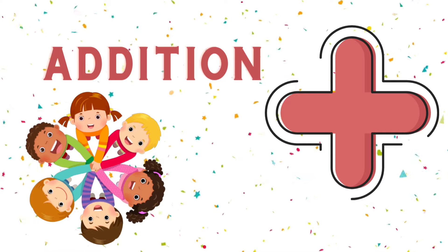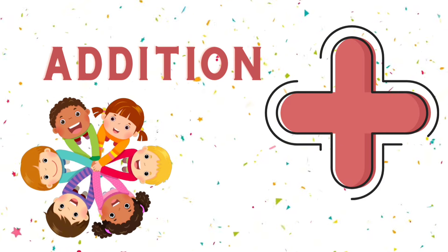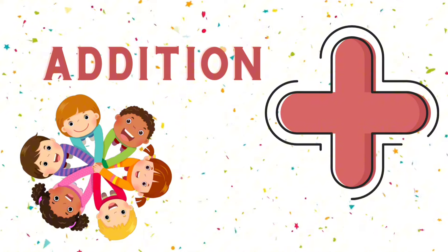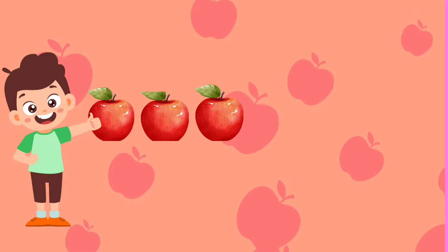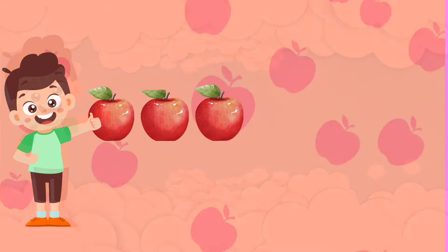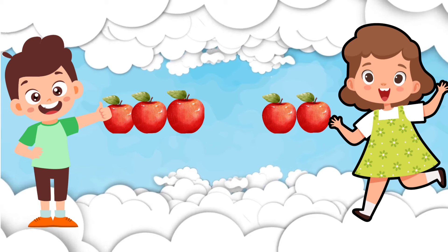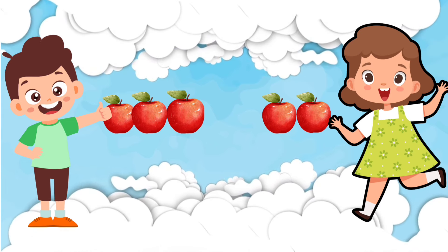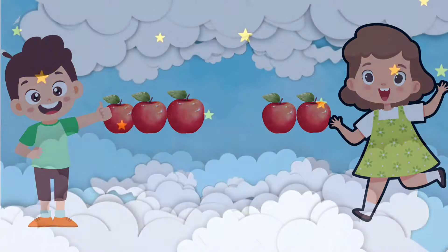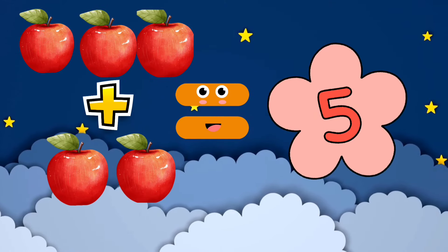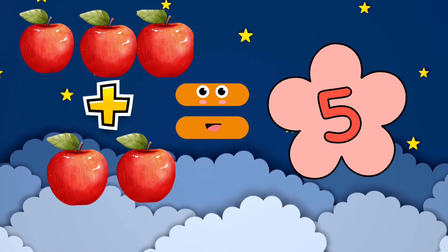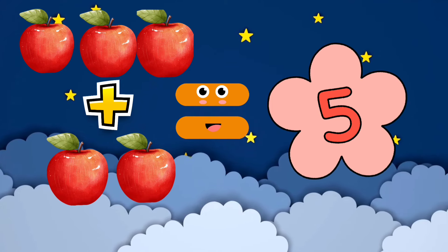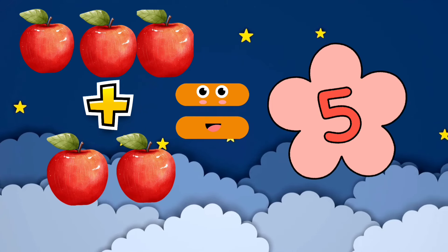First up, let's talk about addition. Adding numbers is like putting things together. Imagine you have three apples and your friend gives you two more. How many apples do you have now? Tell me. That's right — three apples plus two apples equals five apples. Let's see another example.